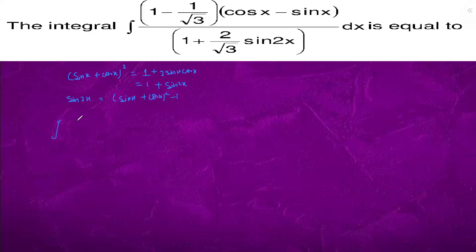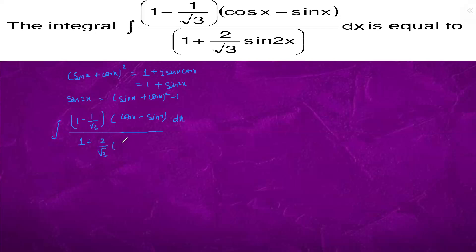The denominator comes out to be 1 minus 1 by root 3, and in the numerator it is cos x minus sin x dx, upon 1 plus (2 by root 3)(sin x plus cos x whole square minus 1).